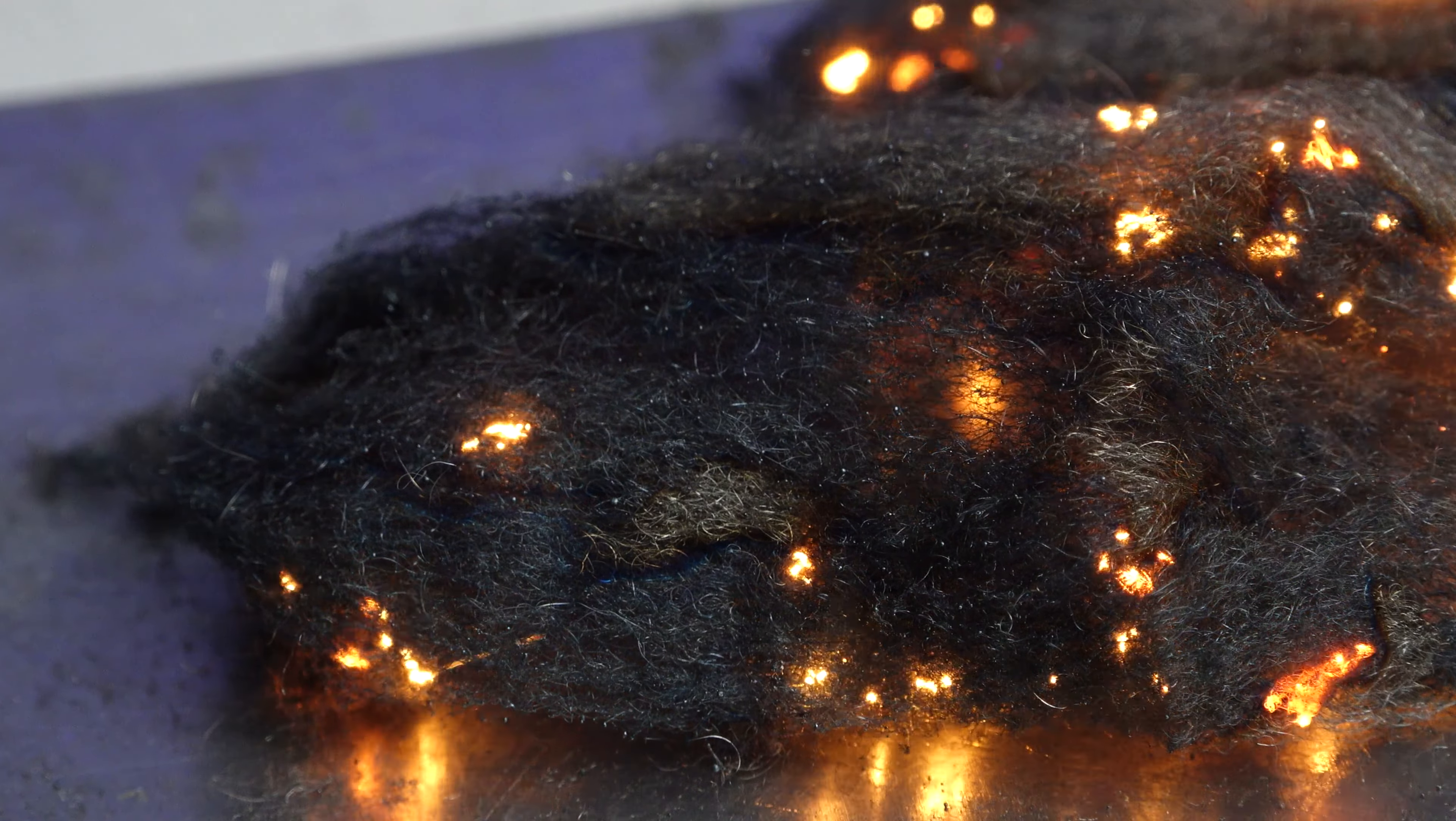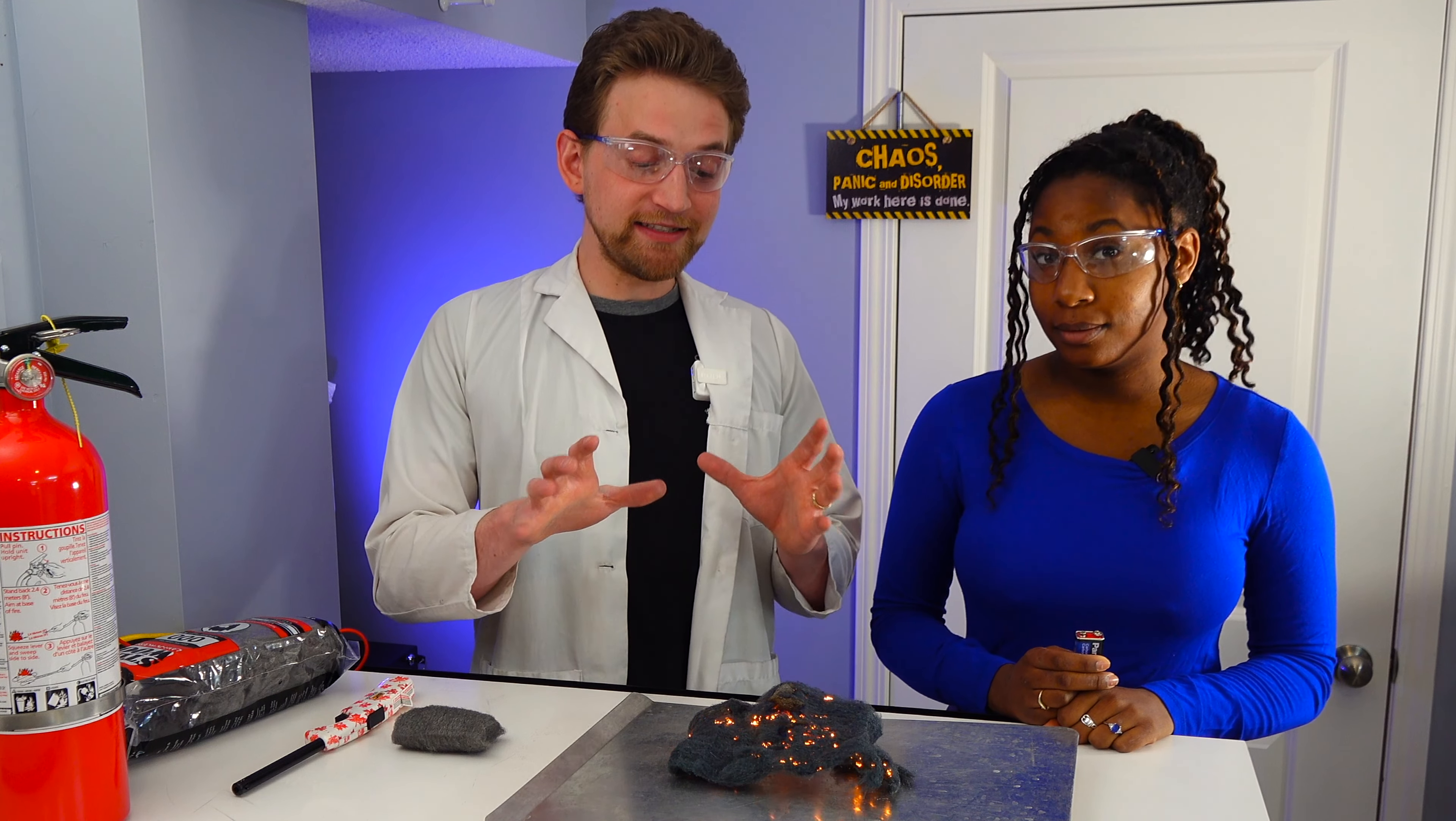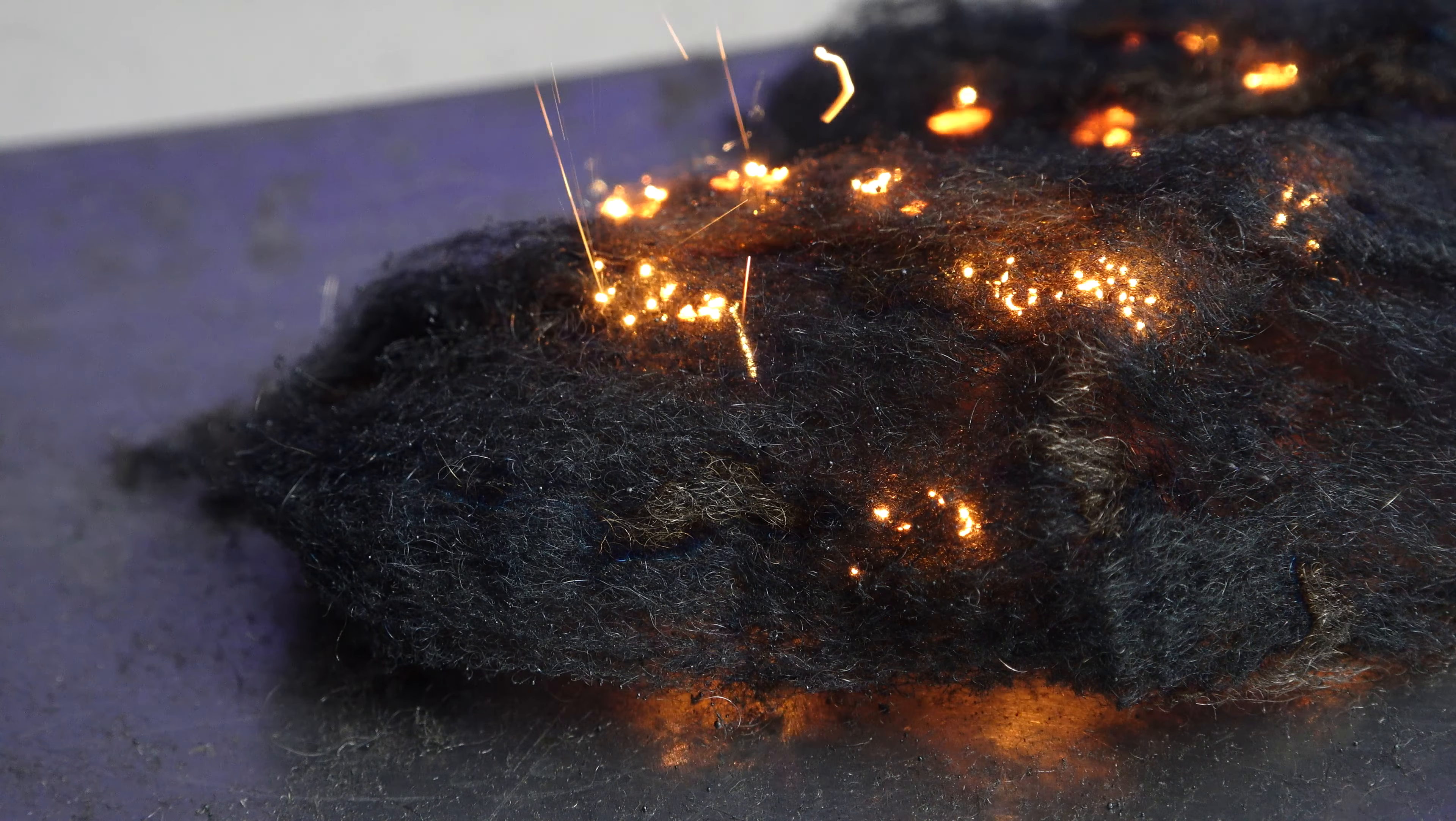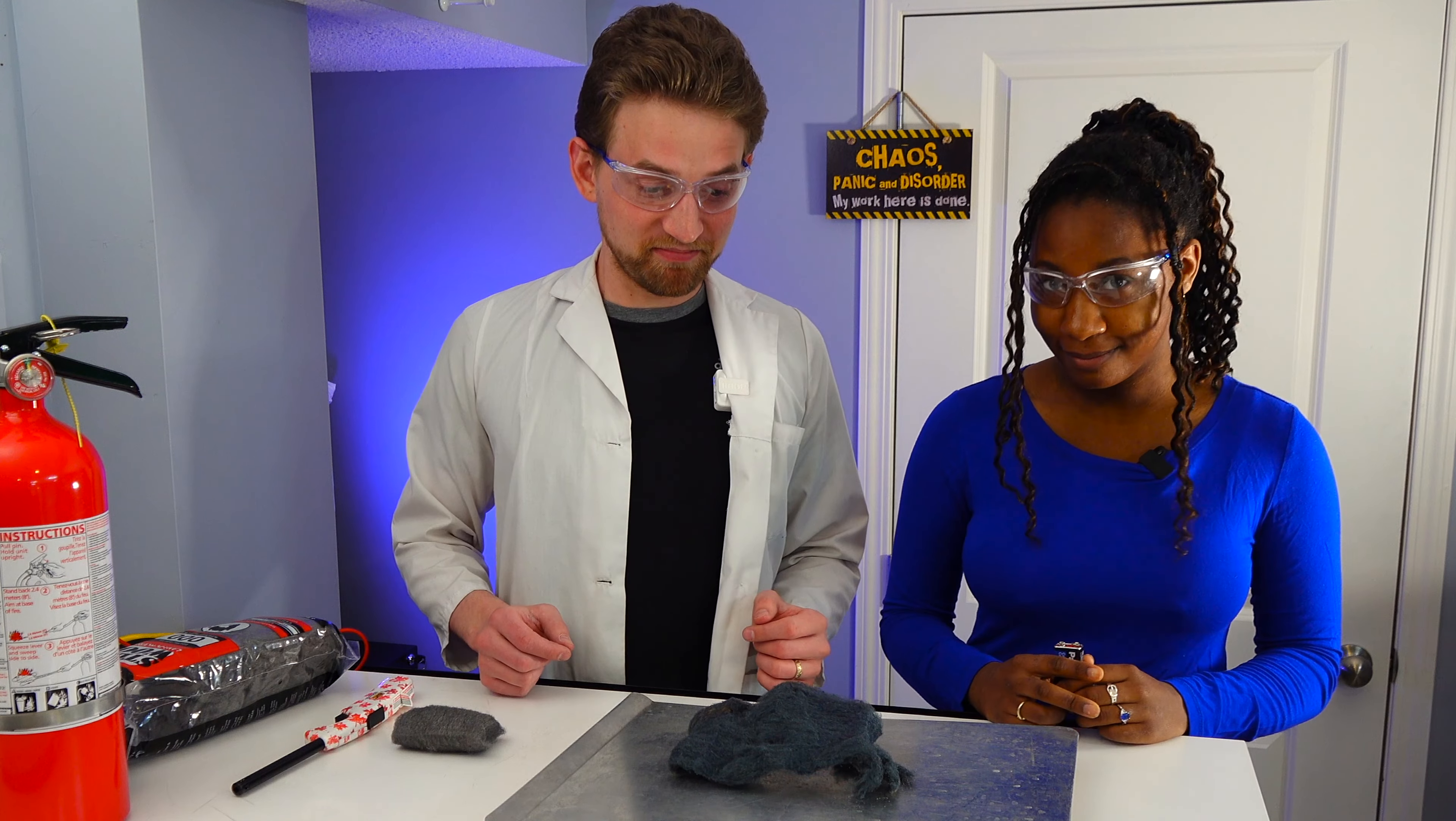So another thing that's really cool about this experiment is the fact that as the steel, which is an alloy of mostly iron and carbon, as it combusts and gets oxidized, it turns into iron oxide. And iron oxide is actually heavier than steel. So as this burns, it's gaining mass. That's so cool. And we're going to try and show that to you a little bit later. So now we have a lump here of it's no longer steel. This is actually iron oxide instead of steel. It's pretty cool.